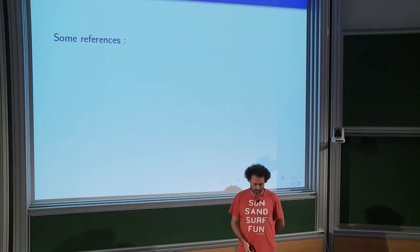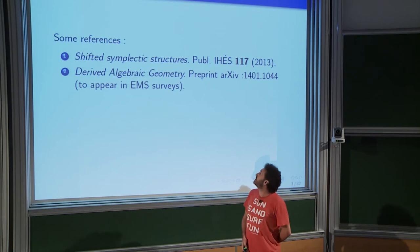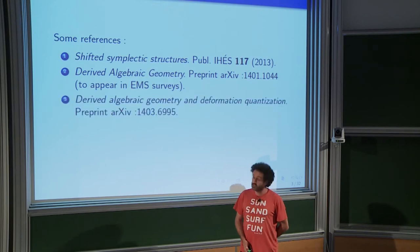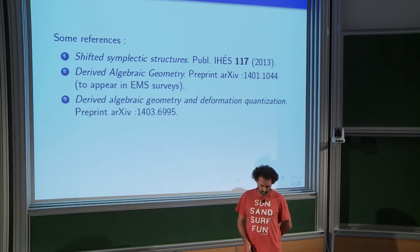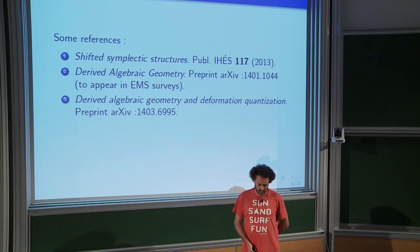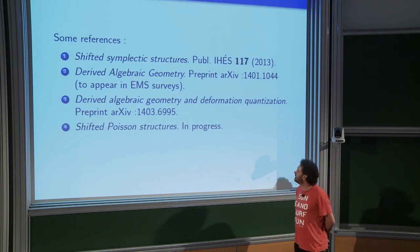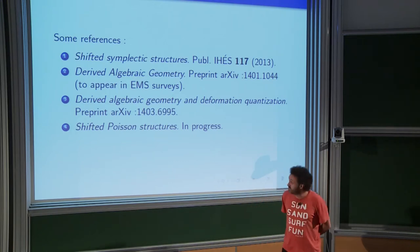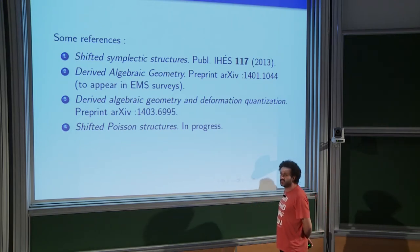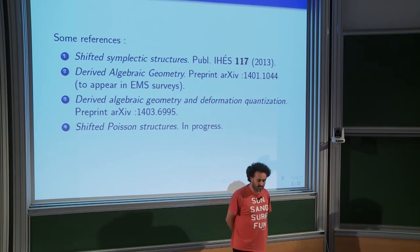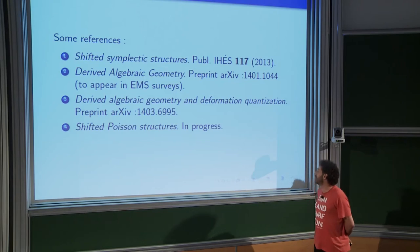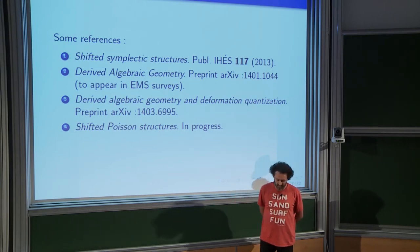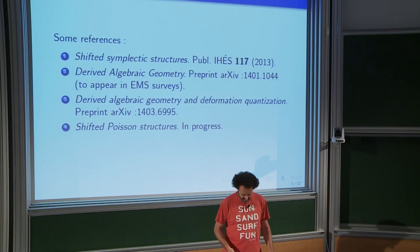Some references: there is a paper where shifted symplectic structures are defined and studied, and there are two preprints covering most of the content of this talk. There is also a work in progress about shifted Poisson structures containing the full details. I must admit I have lower standards about what 'in progress' means — we haven't started writing yet, but we think the mathematics are done and we are very motivated.